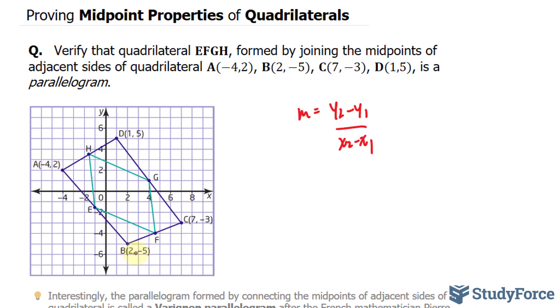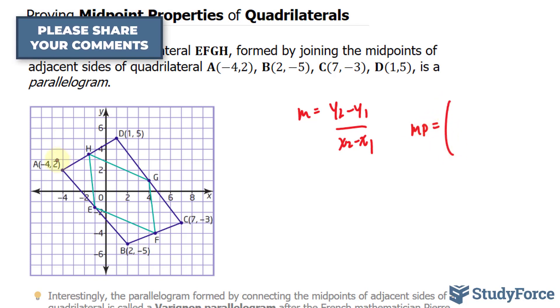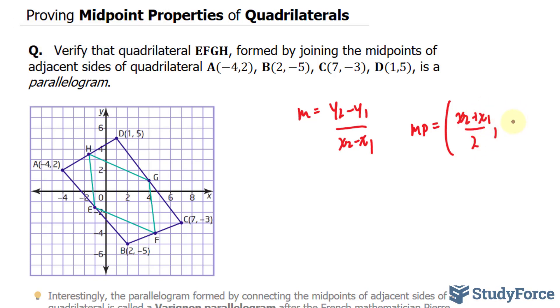So the midpoint between A and B is the following. We have the midpoint, which I'll represent as MP, is the average of the X coordinates. So X2 plus X1 divided by 2, and Y2 plus Y1 divided by 2.